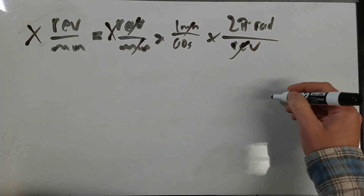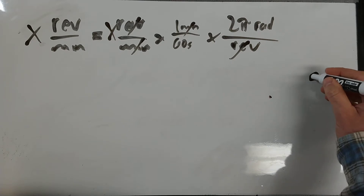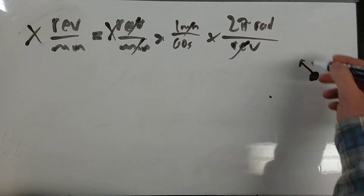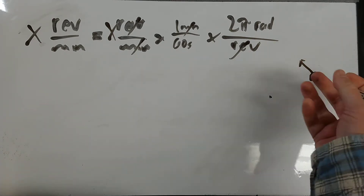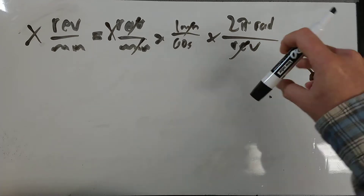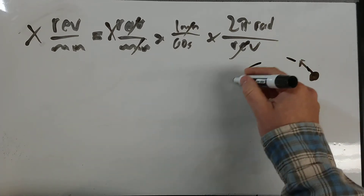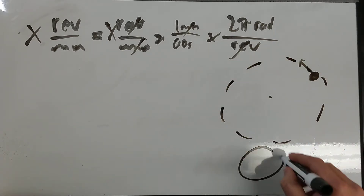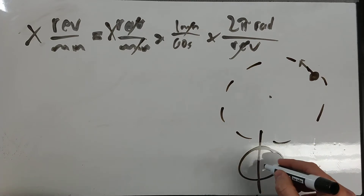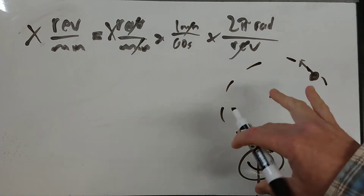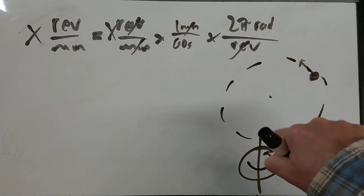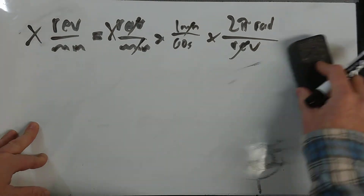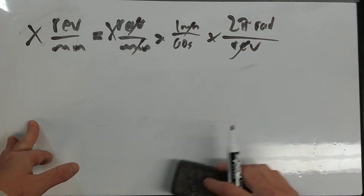Revolution is technically when something orbits around, like a planet around the sun — that's a revolution. A rotation is when something spins about its own axis, like a ball spinning about its axis. We use them somewhat interchangeably sometimes.